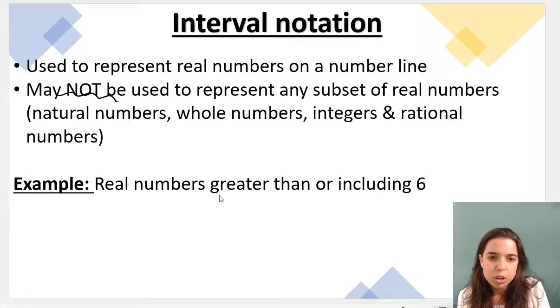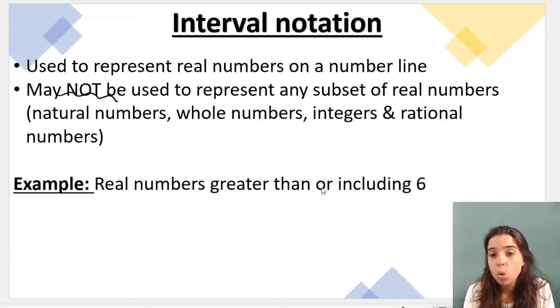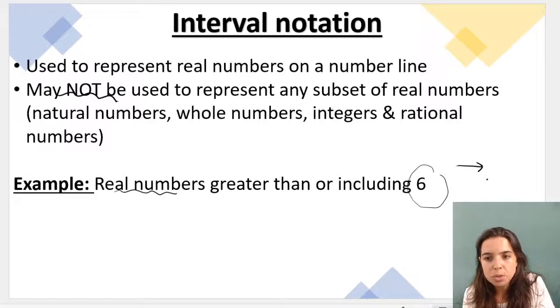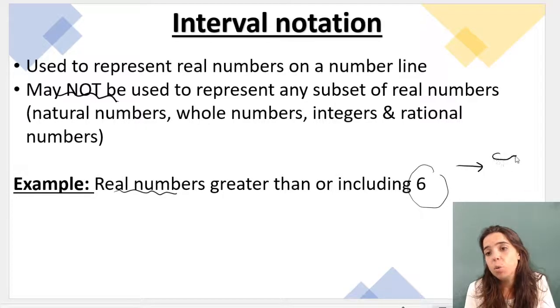Let's do an example. If I'm trying to illustrate real numbers greater than or including 6, we're talking about real numbers here, greater than or including 6. So 6 is on one end of the spectrum, and we go all the way up to infinity. They don't tell us where to stop, so we're going all the way up to infinity. How do I do this?